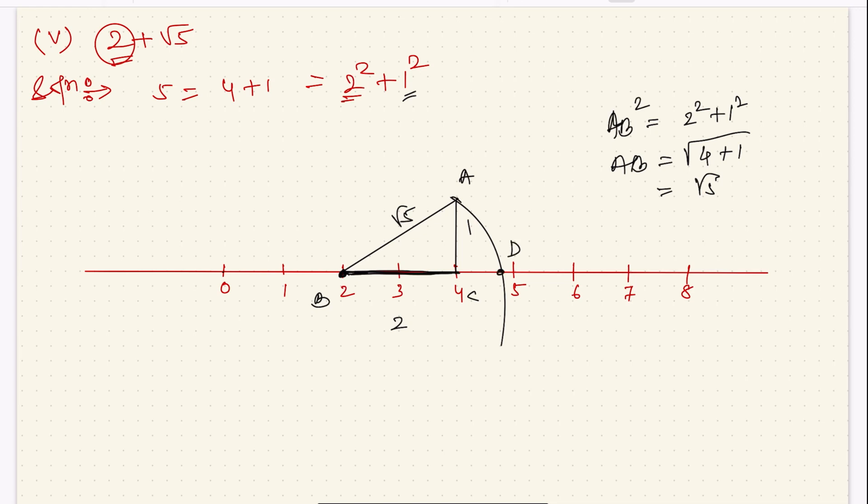Now from 0 to B it was 2, and from here till D it is root 5. So I can write down, name this as O. So OD is equal to OB plus BD. OB is how much? O to B is 2.